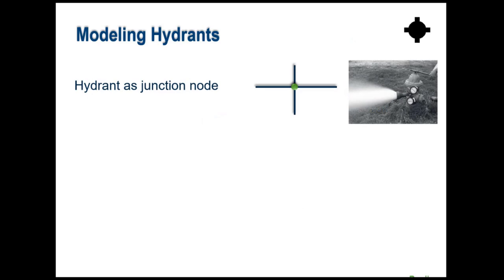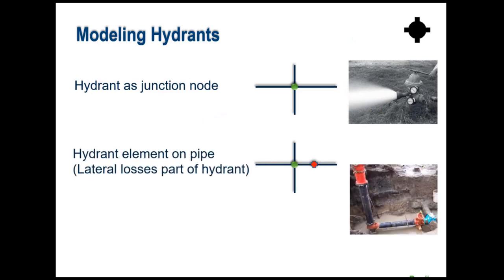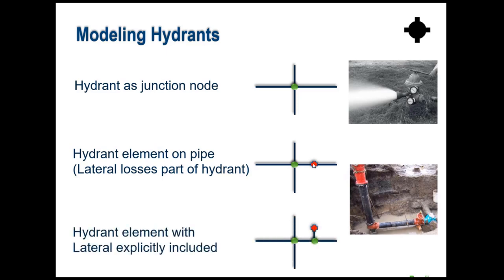Hydrants can be modeled three ways: as a junction node, as a hydrant element near a junction node (which includes losses in the hydrant element itself), or explicitly with full detail including lateral pipes if importing from GIS. Adding every hydrant explicitly makes the model much bulkier. Testing shows all three approaches give essentially the same results, so the third level of detail is generally not necessary, though it's not wrong to use it.